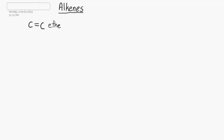When a double bond exists between two carbons, the compound is called an alkene. Instead of ethane, we have ethene. Instead of propane, it's propene and butene.